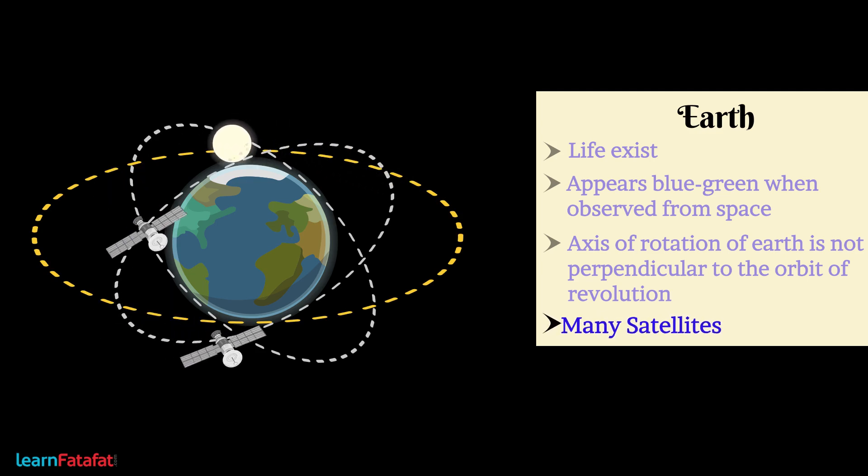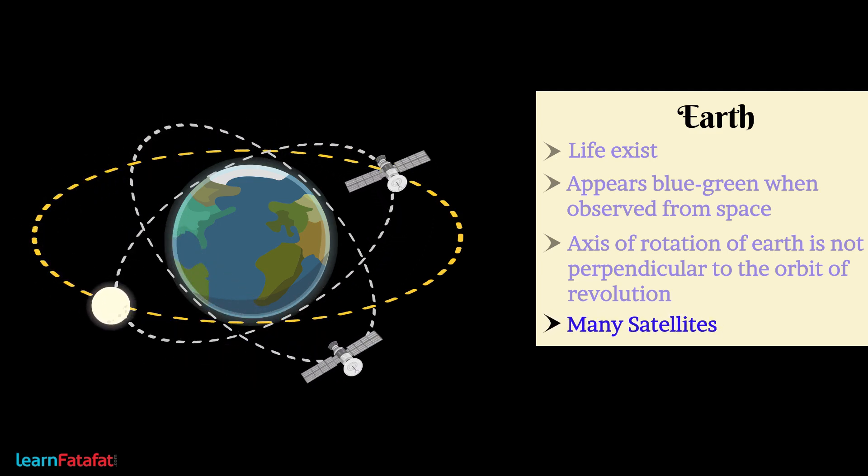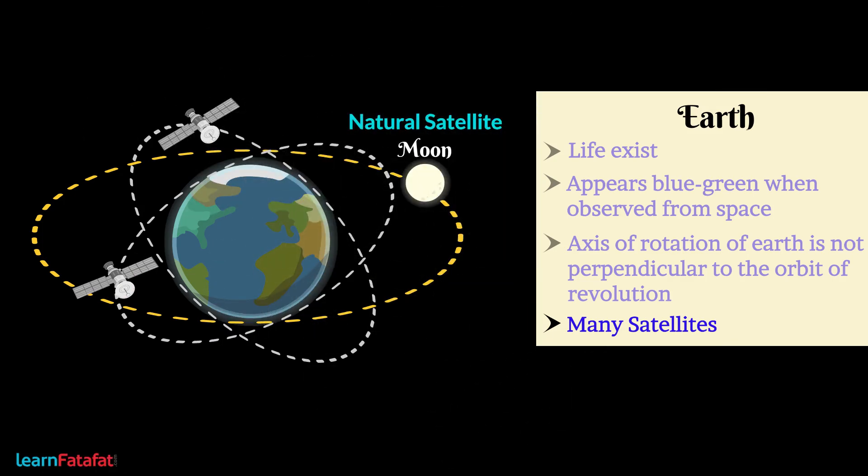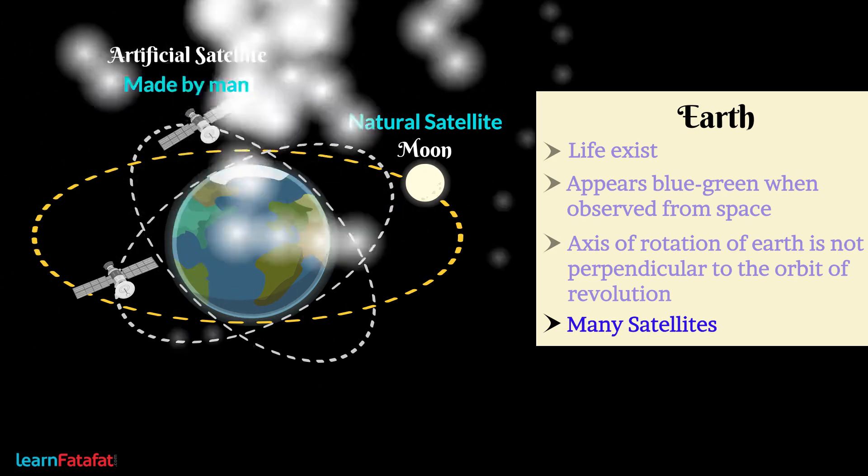There are many satellites revolving around Earth. The Moon is the natural satellite of Earth. The rest are made by man and are called artificial satellites.